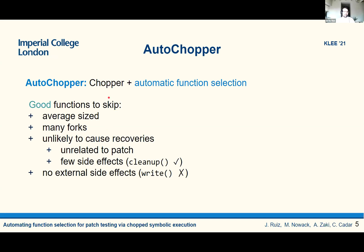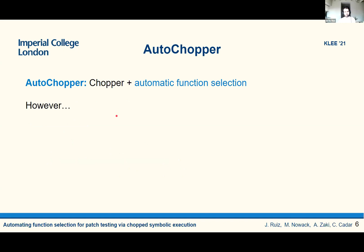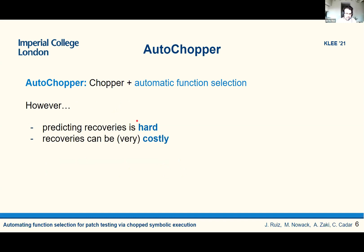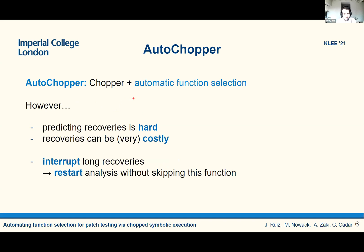An ideal candidate for skipping would be cleanup functions. A cleanup function does not produce any data that is useful and that should be used later, so it can be safely skipped. It shouldn't have any external side effects — for example, the write function that interacts with the file system — because those are difficult to model and snapshot. However, even with all of this, it is very difficult to predict recoveries, so recoveries can still happen and they can also be very costly.